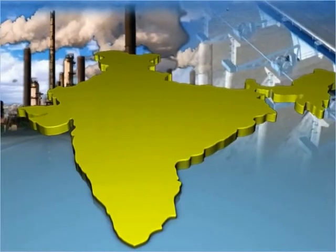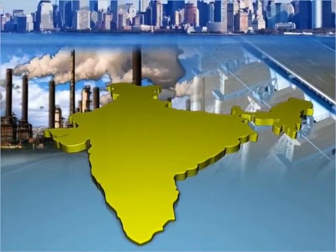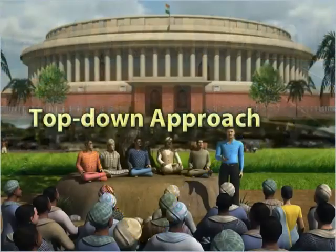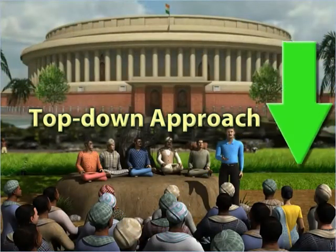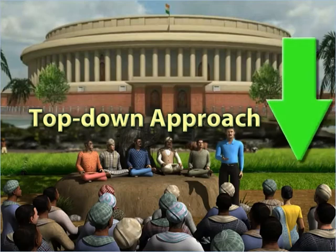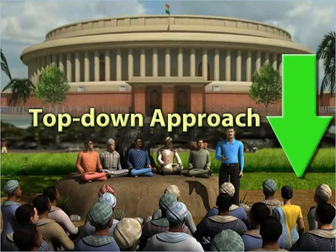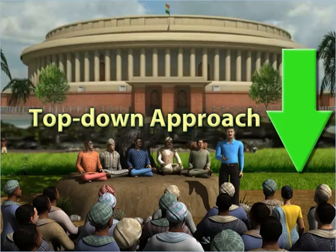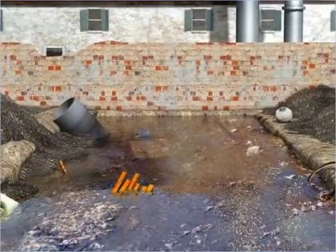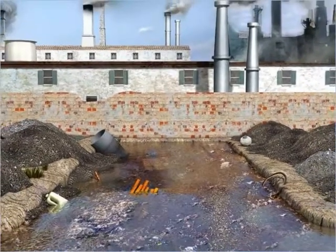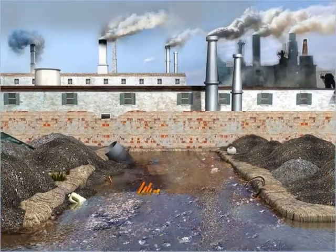The development model followed by most countries, including India, is a top-down approach. It means that development policies are made at the central or state government levels and are implemented at the ground level. In this process, people at the grassroot level are not consulted. In addition, this model is usually driven by technology, involves high cost and is ecologically wasteful.